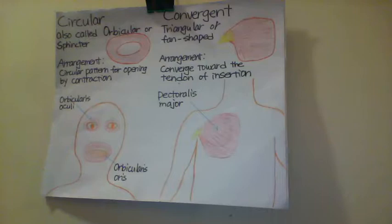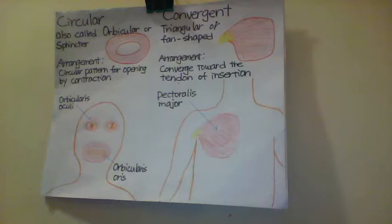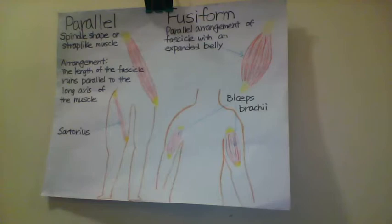Convergent muscle is a triangular or fan shape. Muscles have a broad origin, and the fascicles converge toward a single tendon of insertion. The large muscle of the chest, the pectoralis major, is an example of a convergent muscle, because it converges on the greater tubercle of the humerus via tendon.